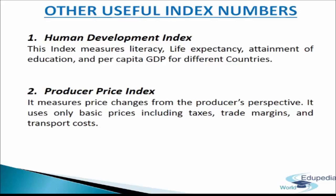Producer Price Index (PPI) measures price changes from the producer's perspective. It uses only basic prices including taxes, trade margins, and transport costs. A Working Group on Revision of Wholesale Price Index (base 1993–94 = 100) examined the feasibility of switching from WPI to PPI in India, as in many countries. PPI measures the average change in selling prices received by producers. To compute this index, the mean of all price changes over a year is usually taken. It concentrates on industry-based production and stages of processing-based companies.